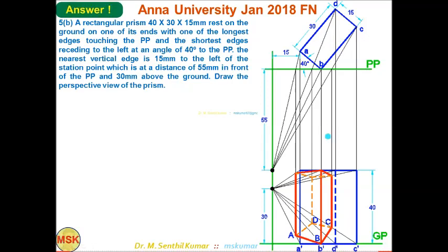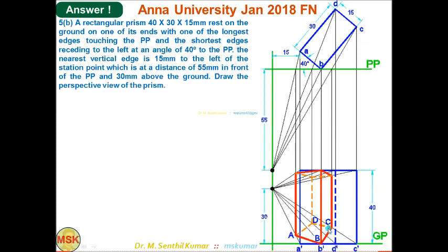In third angle projection perspective, to get the front view the observer sees the top view from the inner side. For this inner-side observer, point B is the nearest and D is the farthest, so the vertical edge through D is hidden in the front view. D-dash is here and that vertical edge through D-dash is hidden. The central plane (green vertical line) is 15 mm to the left. Mark the top view of the station point S: 55 mm in front of PP. Mark S-dash: 30 mm above GP.